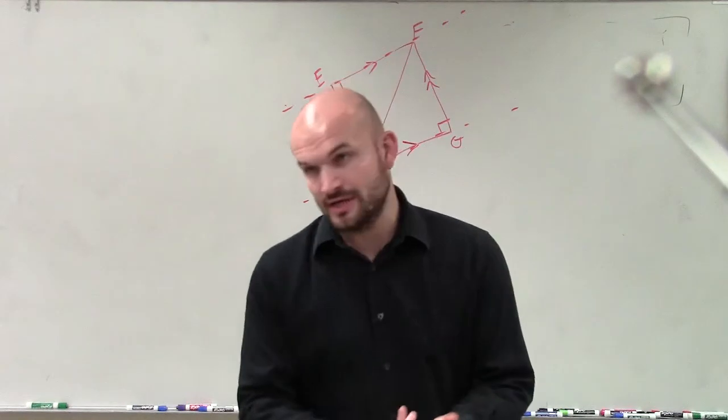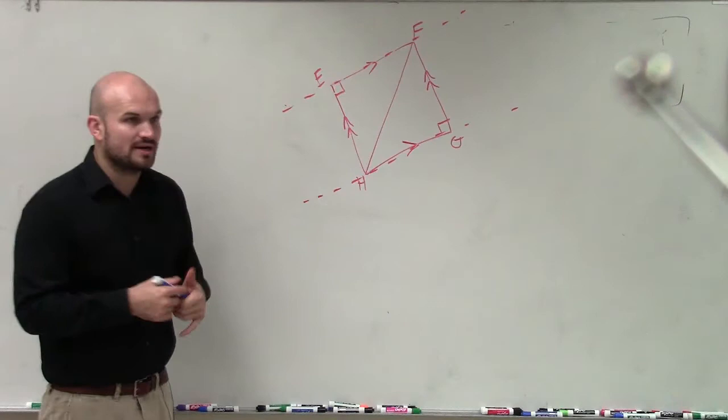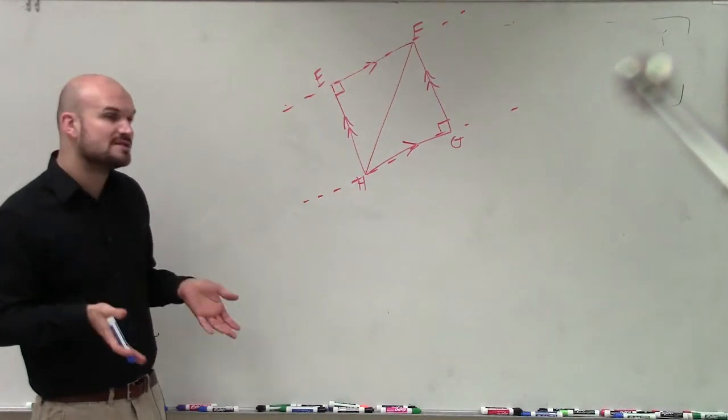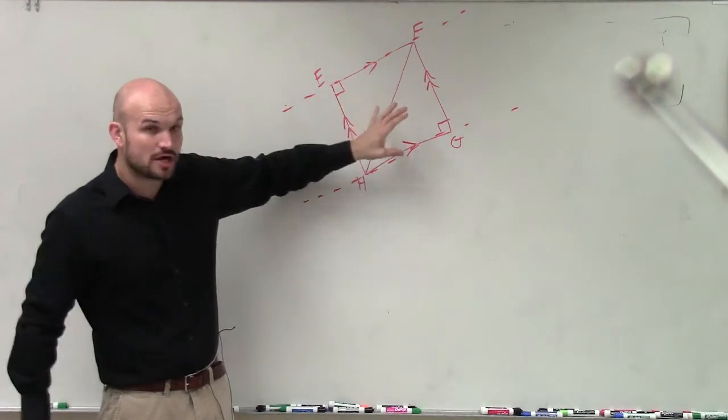Alternate interior angles, alternate exterior angles, corresponding angles, and consecutive interior angles. Well, what I'm looking for, if I'm trying to determine a congruency statement, I want to be able to show that angles are equal to each other.